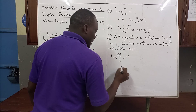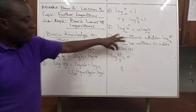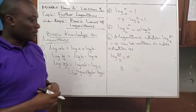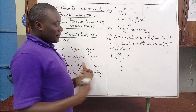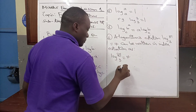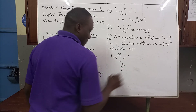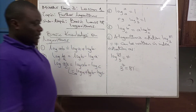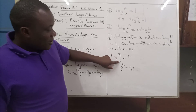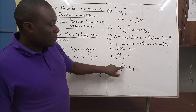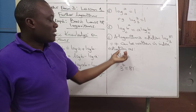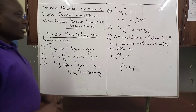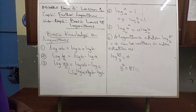To change to index notation: the base remains the base, so we write 3. The quotient becomes the power, so 4 becomes the exponent, and the number becomes the result. Therefore 3 to the power 4 equals 81. The base stays constant; it is the power and the quotient that interchange positions.